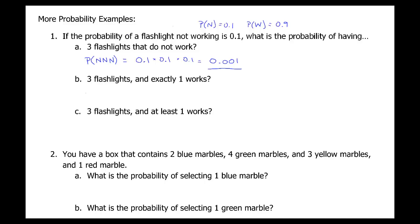The next question: if you have three flashlights, what's the probability that exactly one of them works? There are three options. The first one could work and the other two don't. Or the first doesn't work, the second works, the third doesn't. Or the first two don't work and the third one does. We find the probability of each and add them together.